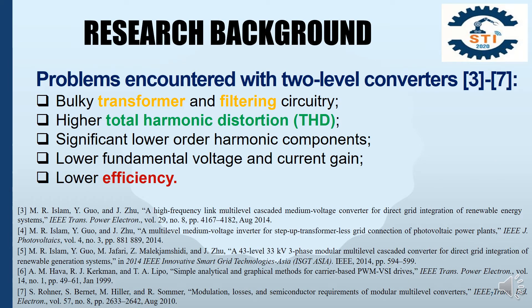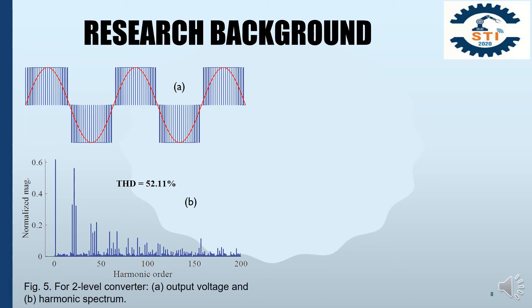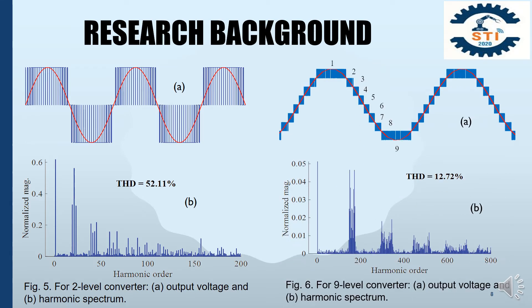This is the research background. Several types of problems have been found in two-level converters. There are bulky transformer and filtering circuitry, higher total harmonic distortion, significant lower-order harmonic components, lower fundamental voltage and current range, and finally lower efficiency. Figures 5 and 6 show the output voltage and harmonic spectrum of two-level and nine-level converters respectively. It can be stated that the THD depends on the number of levels. By increasing the number of levels, the THD performance can be significantly improved. For this reason, scientists are focused on multi-level converters instead of two-level converters.